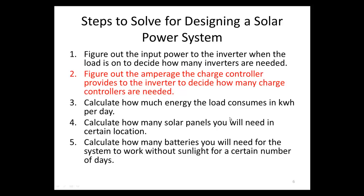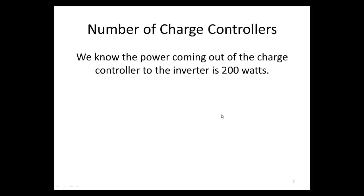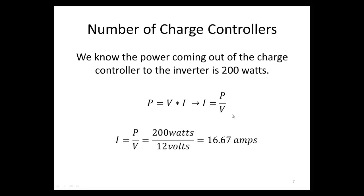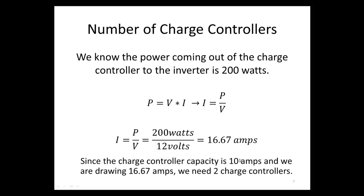Step two: we figure out the amperage the charge controller provides to the inverter to decide how many charge controllers are needed. The power coming out of the charge controller to the inverter is 200 watts. Using the equation P = V × I, we rearrange to get amperage equals power over voltage: 200 watts divided by 12 volts gives us 16.67 amps. Since our charge controller rating is 10 amps and we're drawing 16.67 amps, we need two charge controllers, giving a combined rating of 20 amps.